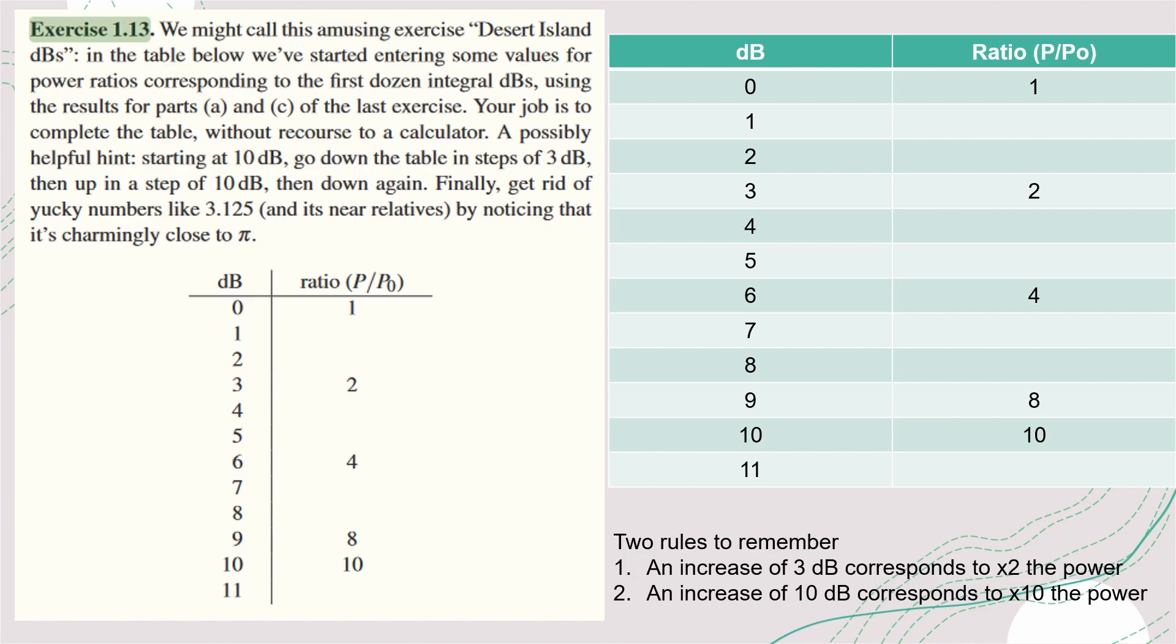Given the partially filled table here we need to fill in the gaps using these two rules. From what I can see on this table we have been given the power ratio for 10 dB. We know that from rule number one if we decrease the dB number by 3, so that's 10 to 7, we have to half the power. So the 10 will go to 5.